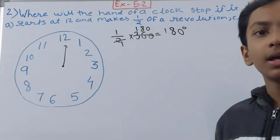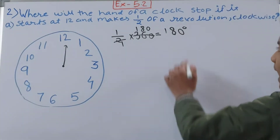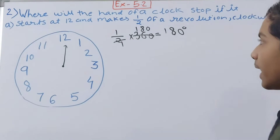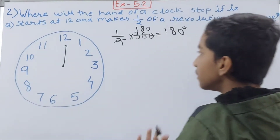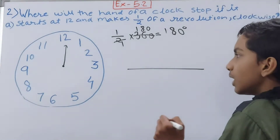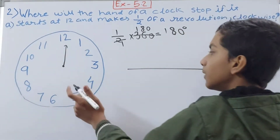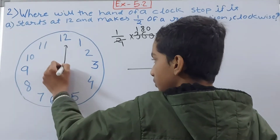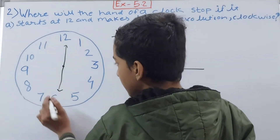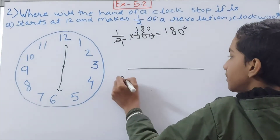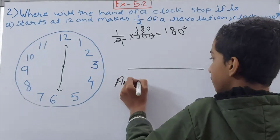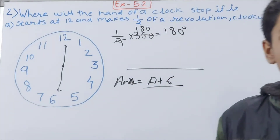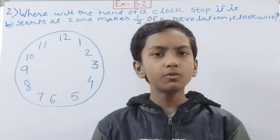So the hand needs to revolve 180 degrees. Now, 180 degrees is always a straight angle. From 12, simply draw a straight line downward — the number we land at is 6. So the answer is: the clock hand will stop at 6 if it makes half a revolution starting from 12. Let us move on to part B.